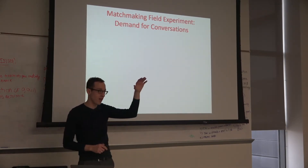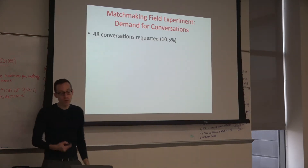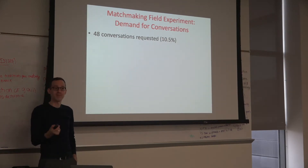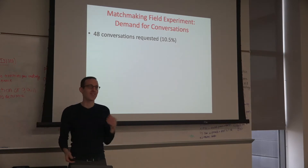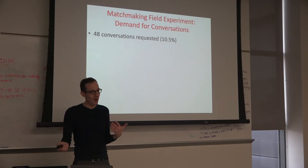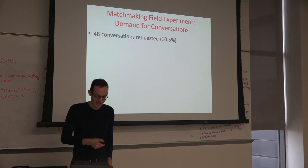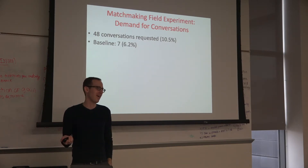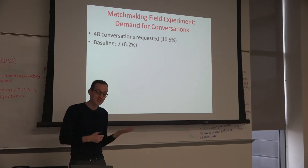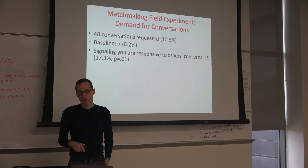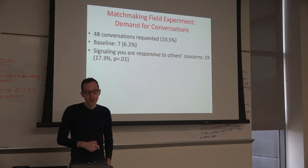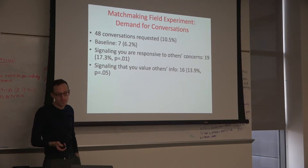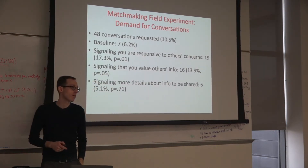So 456 folks were randomly assigned to get one of those four messages: baseline, engaged version one, engaged version two, or more information. 48 people responded — 48 out of 456 — and I had half-hour conversations with all of them. In the baseline, about seven people responded, roughly 6.2 percent. Signaling responsiveness to others' concerns had a big impact on boosting response rates, as did signaling that the researcher values others' information. Simply giving more information had essentially no effect.